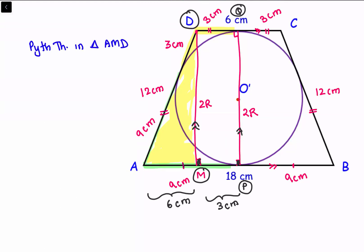So hypotenuse is 12 centimeter. Hypotenuse square equals the sum of squares of the other sides. So this is 6 square plus 2R whole square.